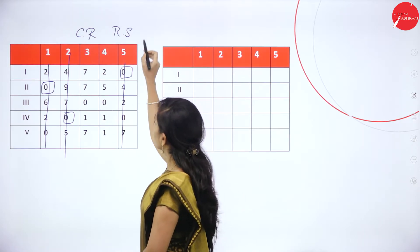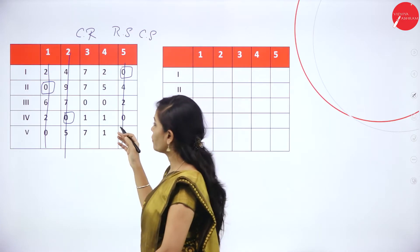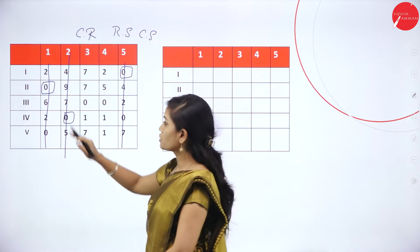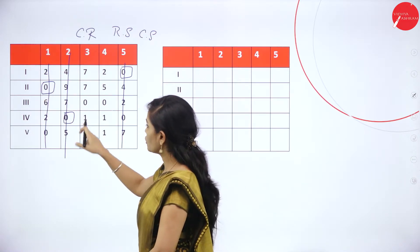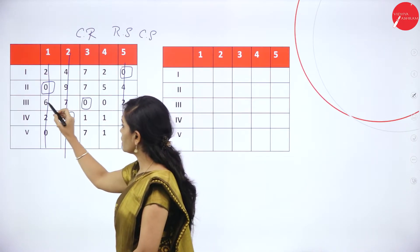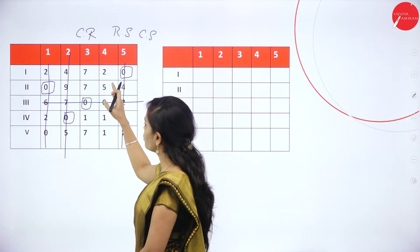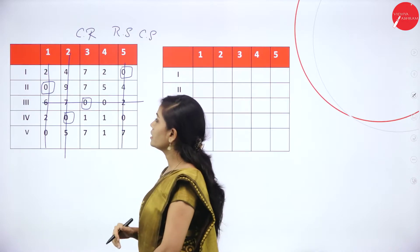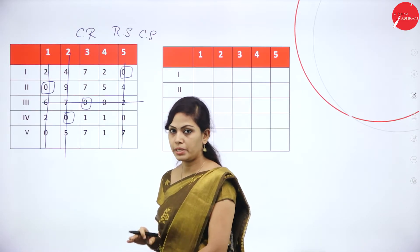Now I will do the column scanning. For column scanning, check each and every column. The first column is cancelled, the second column is also cancelled. In the third column we have only one 0 — put a square box around it and put horizontal lines. In the fourth column there is no other 0, the one 0 is also cancelled, so nothing more can be done. Row scanning and column scanning are completed.